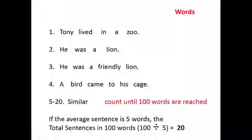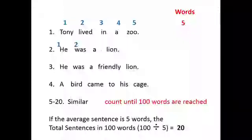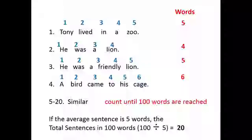Let's start with a simple example. 'Tony lived in a zoo. He was a lion. He was a friendly lion. A bird came to his cage.' We would continue until we used up 100 words. Counting sentences: 'Tony lived in a zoo' gives us 5 words, 'He was a lion' gives 4, 'He was a friendly lion' gives 5, 'A bird came to his cage' gives 6. We would need to add 80 more words to our sample. If the rest of the sentences were approximately this length, we would end up with 20 sentences, which gets plotted on our graph at the top — indicating very simple sentence structure; it took 20 sentences to use up 100 words, averaging about 5 words per sentence.